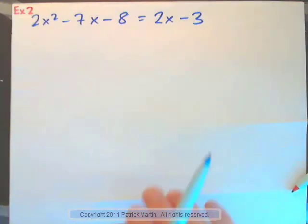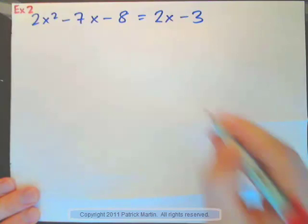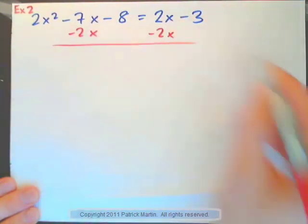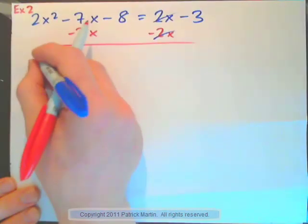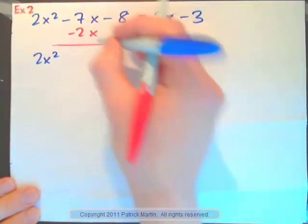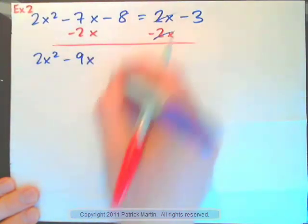So example 2, press pause and do it yourself. Now I'll do it. We need to subtract 2x from both sides. And if I do that, 2x minus 2x is zero. And on the left-hand side, 2x squared. Remember, put it to like terms. These are x terms. So we add it to the x's. Negative 7x minus 2x, minus 9x.